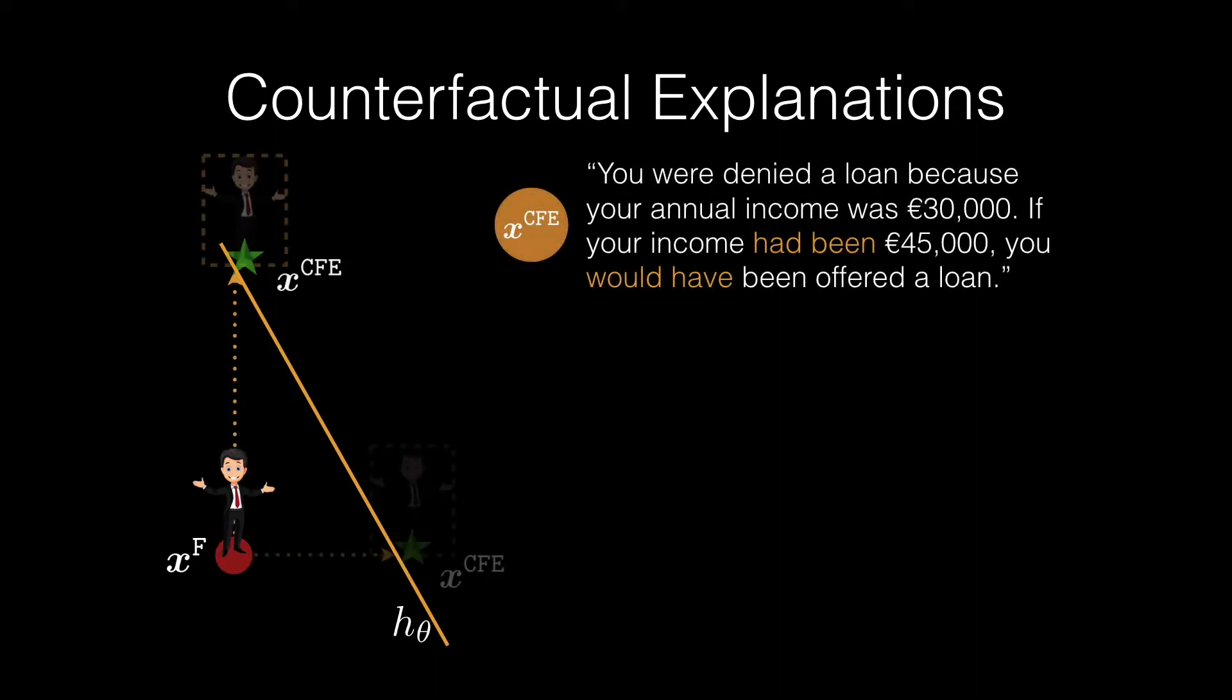A counterfactual explanation is a statement similar to this: You were denied a loan because your annual income was 30,000 euros. If it had been 45,000 euros, you would have been offered the loan.